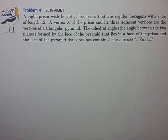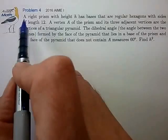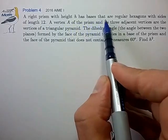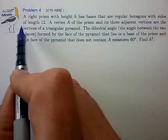Hi, this is problem 4 from the 2016 AIME. A right prism with height h has bases that are regular hexagons with sides of length 12.